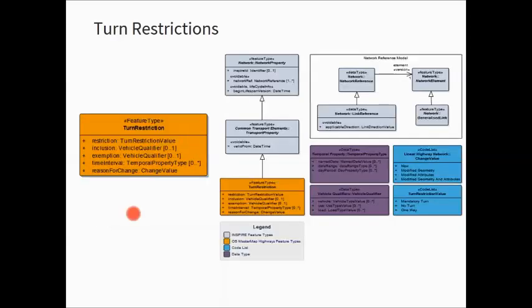Turn restrictions restrict vehicle manoeuvres — for example, forbidden turn, mandatory turn, or ahead only. They are only explicit restrictions: always signed or marked on the road. We do not capture implicit restrictions based on lane splitting around a traffic island. Turn restrictions are referenced via link and multi-link references. The only additional mandatory attribute is restriction — the type of restriction as provided by the turn restriction value. An optional time interval attribute is populated if an interval applies.